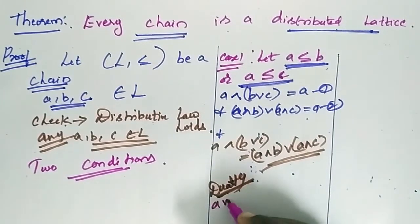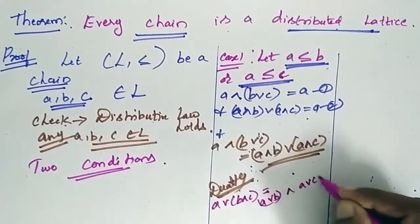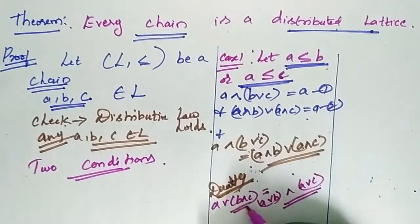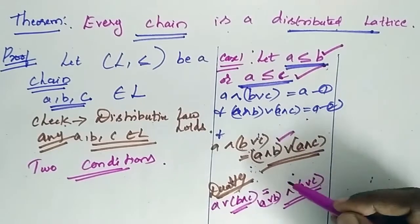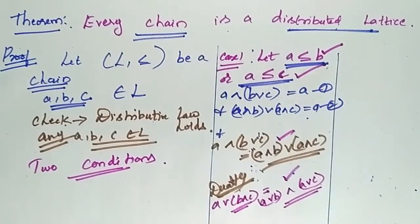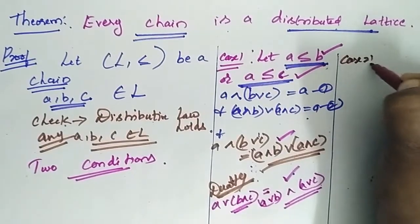a join b meet c is equal to a join b meet a join c. Since a is less than b and a is less than c, this property holds for this lattice. Then we go for the next case, Case 2.